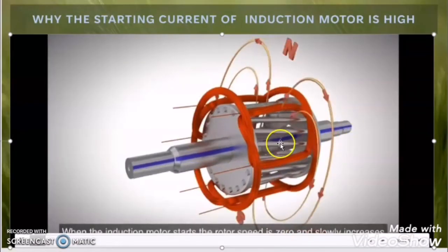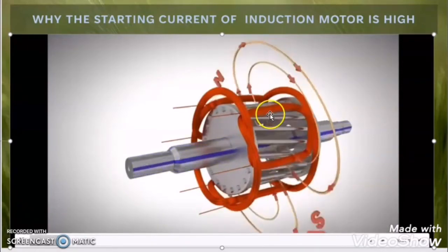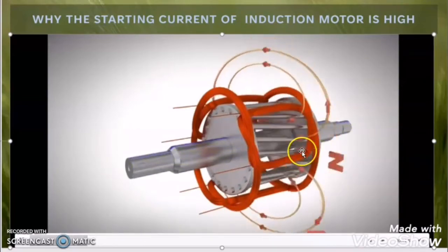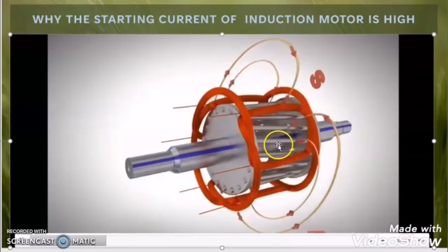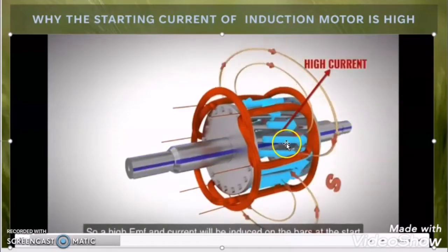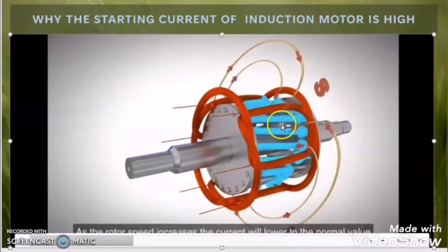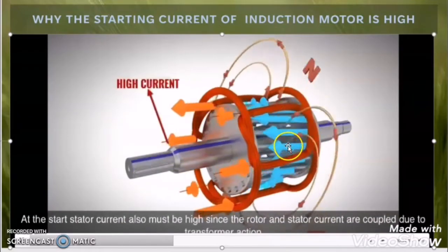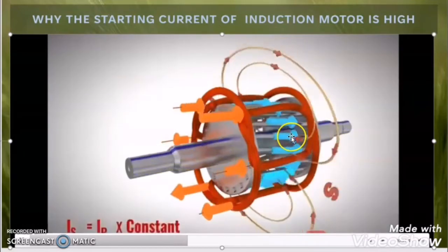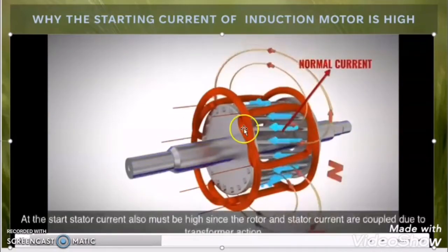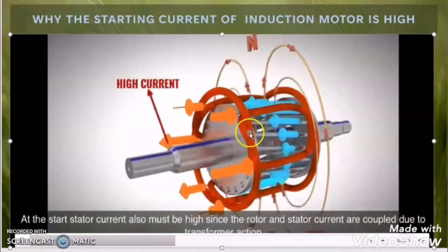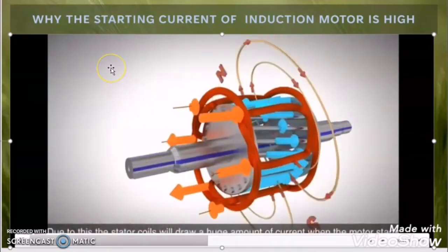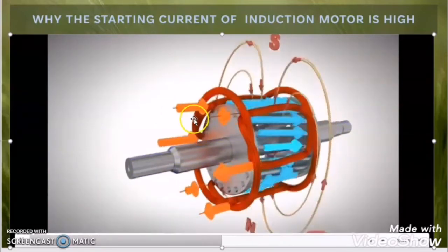At the time of starting, you can notice that the rotating magnetic field is rotating with the synchronous speed but the rotor bar is in the standstill position. So at the time of starting, there will be maximum flux linkage with the rotor bar, which will produce maximum induced EMF and induced current in the rotor bar. As the motor stator winding and the rotor is coupled with transformer action, when there is high induced EMF in the rotor bar, the motor will draw high inrush current at the time of starting.